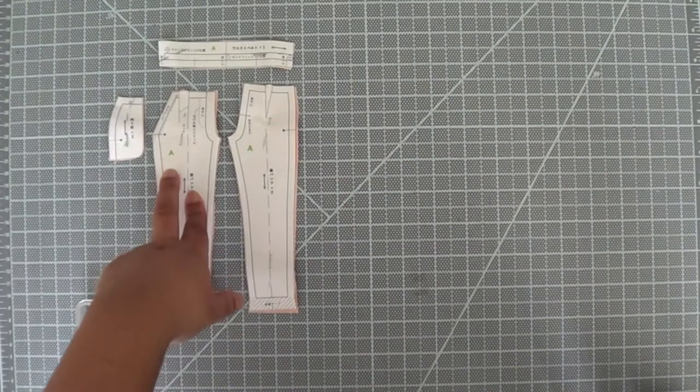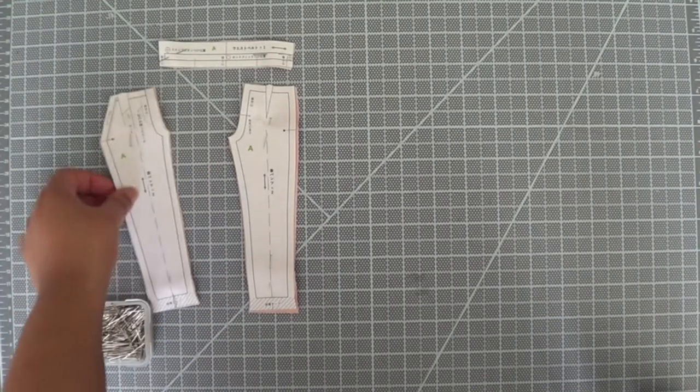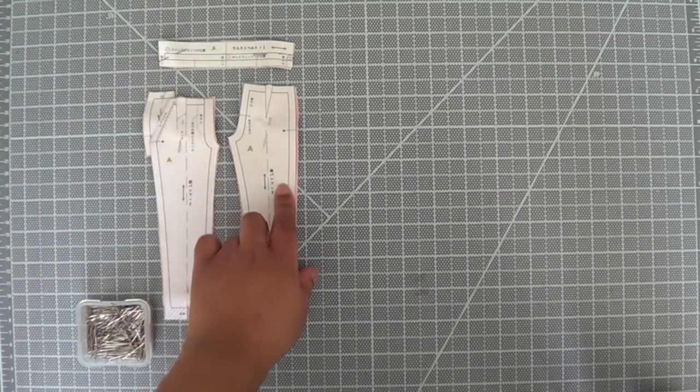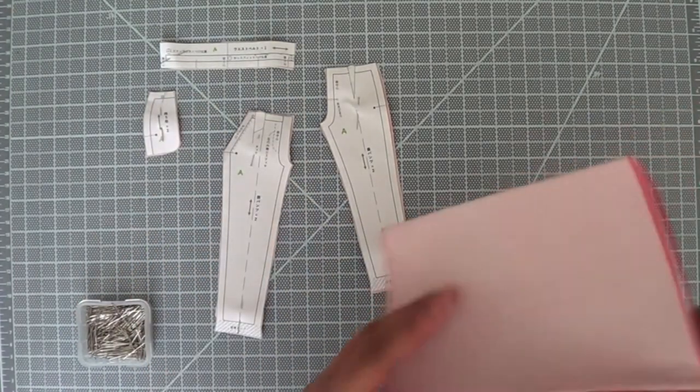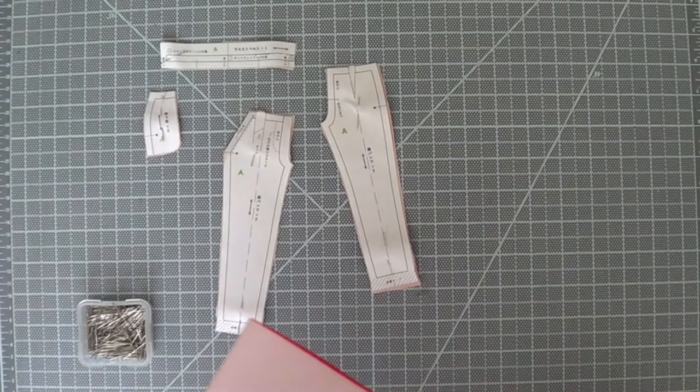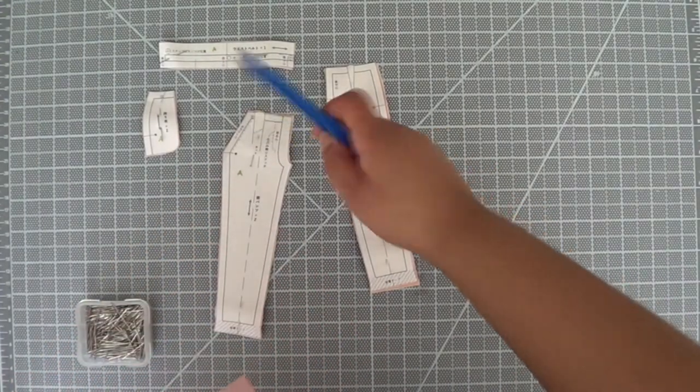First things first, we have the front, the front back pocket piece, the back, and then we have the waistband. So what I'm going to do now is take my tracing paper and my tracing wheel and I'm going to make the marks.